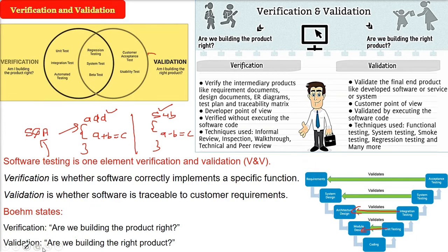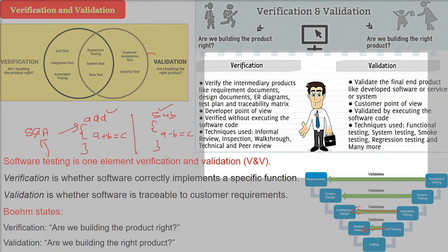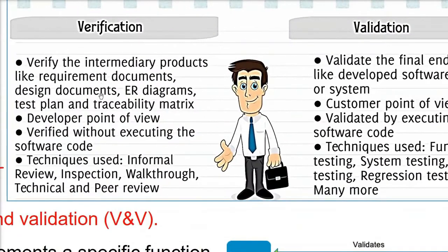Verification and validation. The verification verifies the intermediate products like the SRS, like the design documents, like the ER diagrams, test plan, traceability matrix. And these are done with the developer point of view, because as a developer, we are verifying what we have done is done correctly or not, or some independent team. They will see what the developer has done is correct or not.